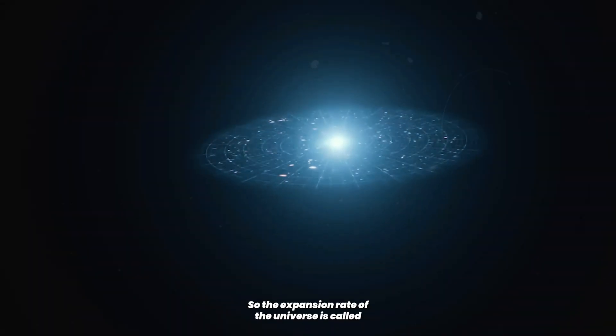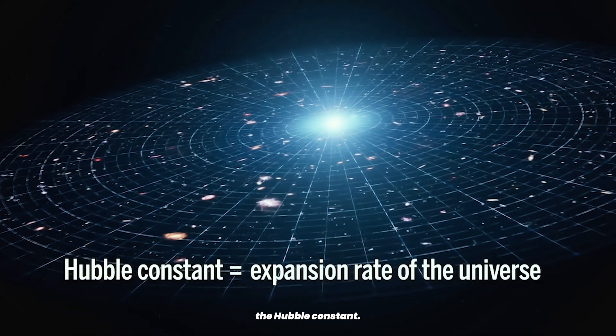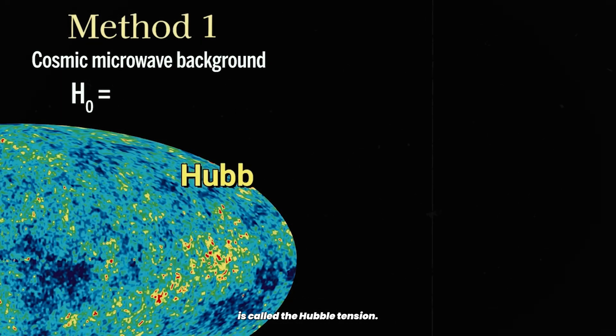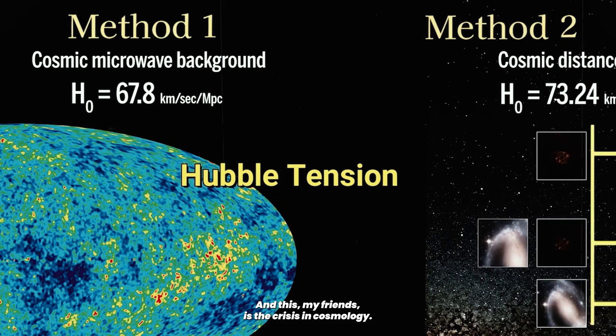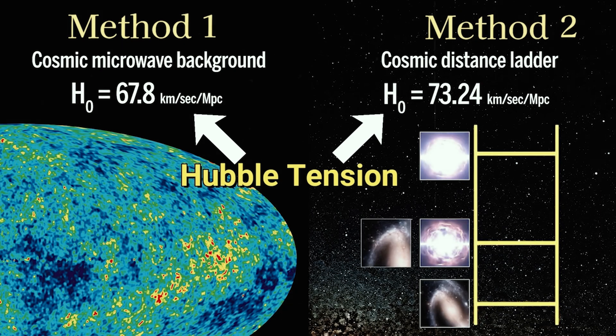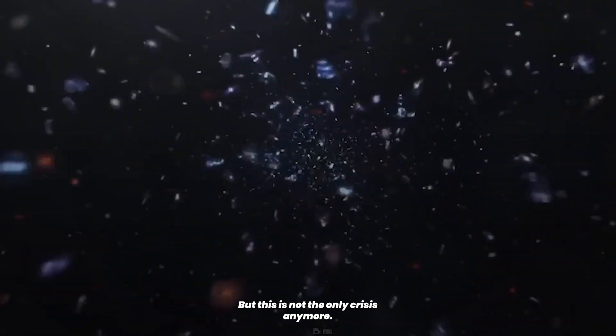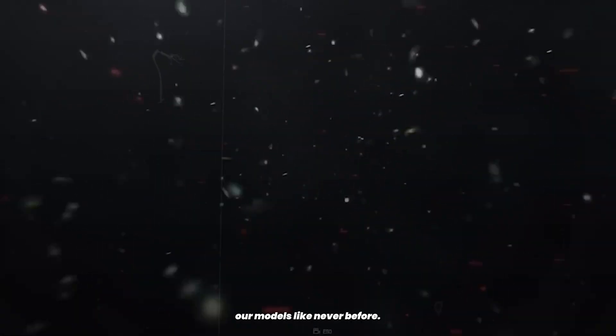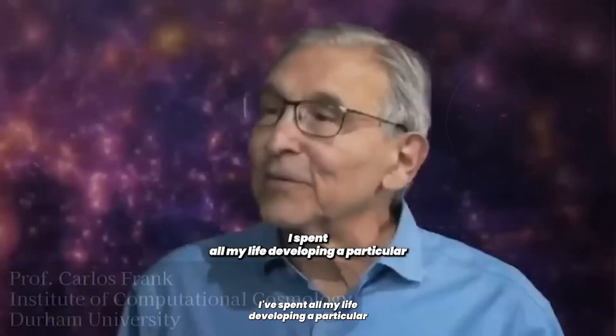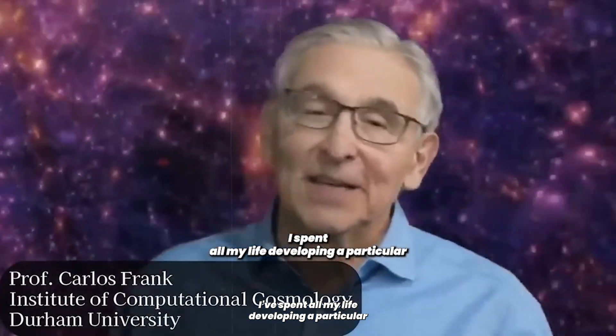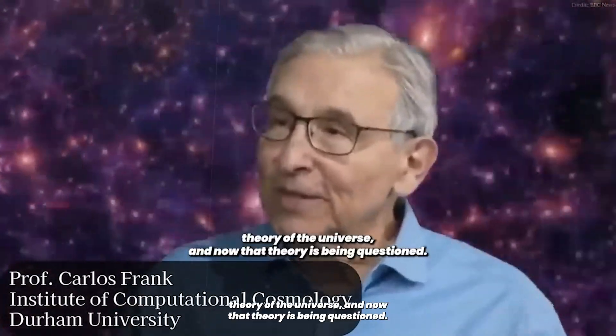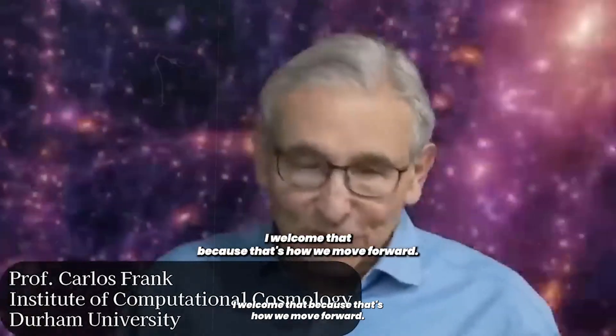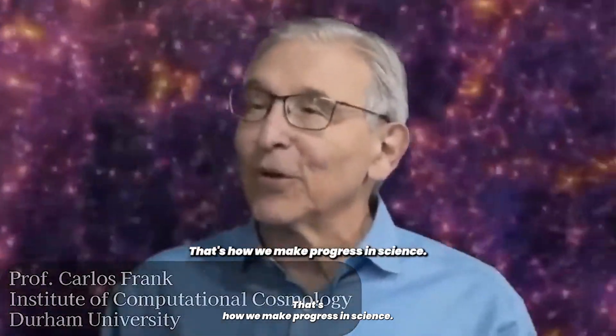So, the expansion rate of the universe is called the Hubble constant. However, the difference between result of the two methods is called the Hubble tension. And this, my friends, is the crisis in cosmology. But this is not the only crisis anymore. A recent cosmological distress has emerged that challenges our models like never before. I spent all my life developing a particular theory of the universe, and now that theory is being questioned. I welcome that, because that's how we move forward. That's how we make progress in science.